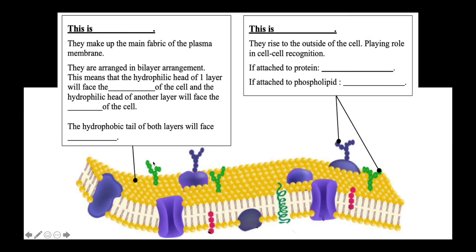Now let's have a look at each of the components in detail. The yellow molecule here is the phospholipid, which makes up the main fabric of the plasma membrane. They are arranged in a bilayer arrangement. The hydrophilic head of one layer will face the cytoplasm of the cell, while the hydrophilic head of the other layer will face outside of the cell. The hydrophobic tails of both layers face each other. The chains here represent the carbohydrates, which rise to the outside of the cell, playing a role in cell-cell recognition. We can use carbohydrates as a marker to identify which side is the cytoplasm and which side is the extracellular matrix.